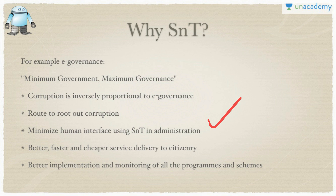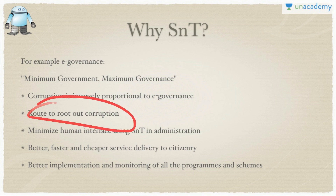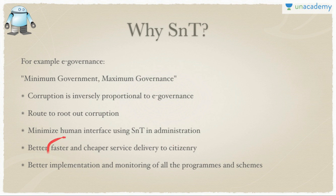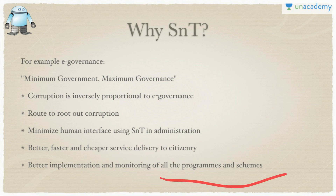In the 70s and 80s, corruption was anecdotally 10 to 20 times higher — there are no records because there was no science and tech to document it. Now awareness is much higher thanks to e-governance and greater transparency. It is one of the routes to root out corruption by minimizing human interface. Computers are not corrupt — human beings are. Minimize human interface and governance will improve. It enables better, faster, cheaper service delivery and better monitoring of programs and schemes.